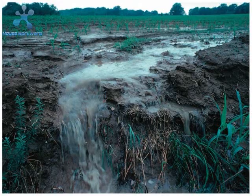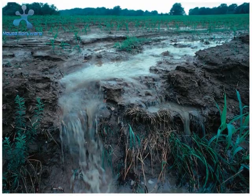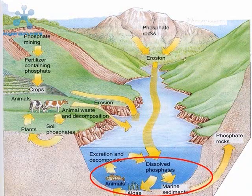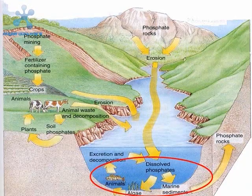Phosphates that enter waterways usually settle on ocean floors and lake bottoms. Some phosphates may reenter the phosphorus cycle when sediments are stirred up, but most are made available to aquatic lifeforms during this process.